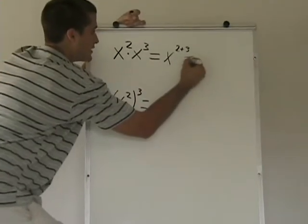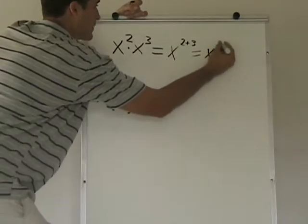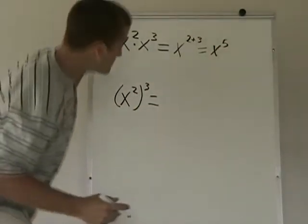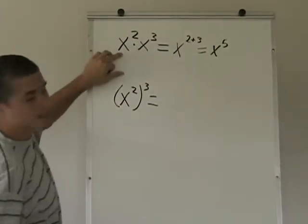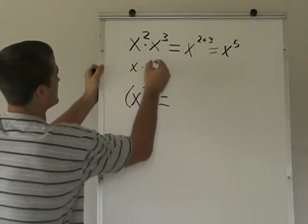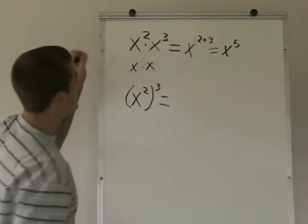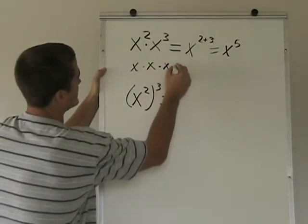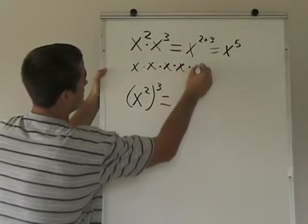so this is going to wind up being x to the fifth. And when you think about it, what you're doing is you're taking x two times for this x squared, so x times x. And then for this x cubed, you're going to be taking three more x's, times x, times x, times x.